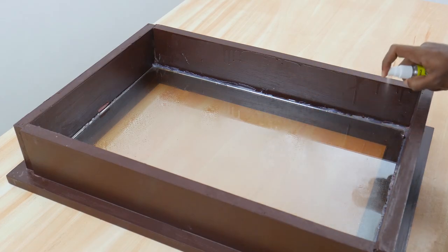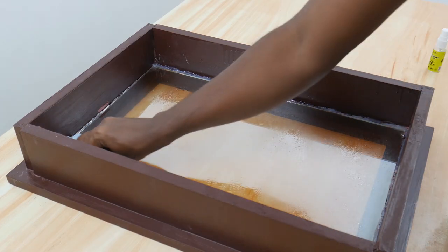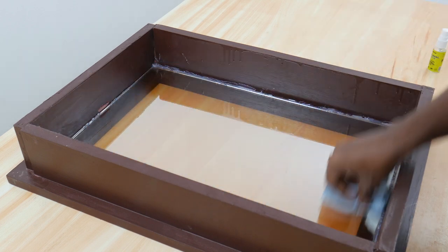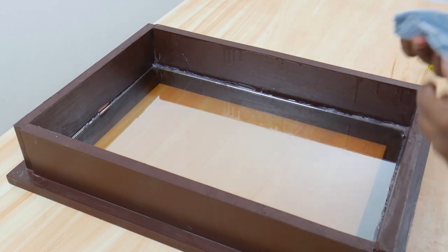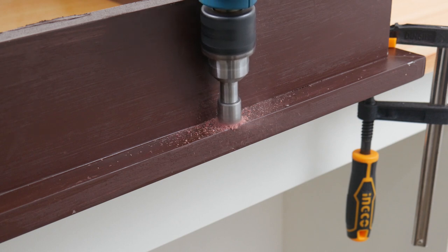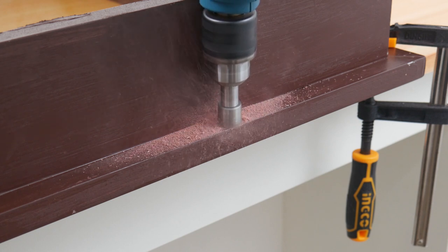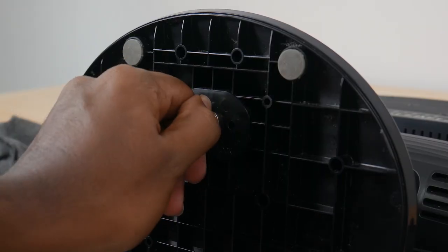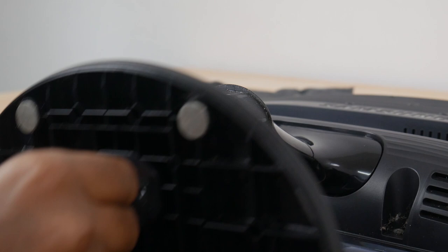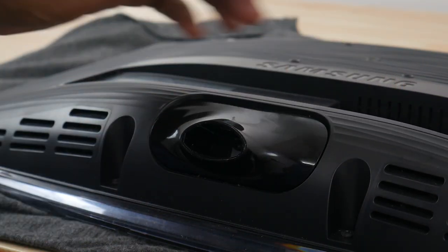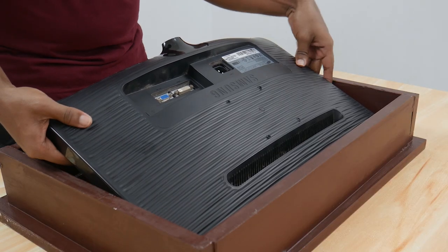Before proceeding into further steps, we clean the back side and front side of the mirror with glass cleaners. Oh, we forgot to drill a notch for the camera module which is a key component in gesture detection. Then we restain the frame. For putting the monitor behind the mirror, we need to remove the stand of the monitor. Then we carefully inserted the monitor.